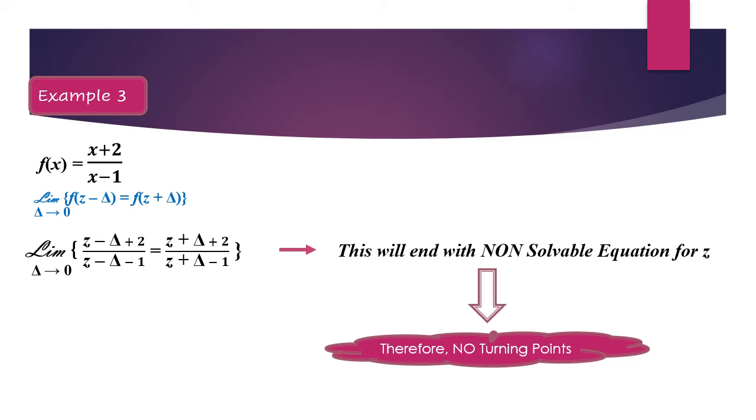And then if you simplify this, which I'm leaving for the reader here, to simplify this, and then you will see that you will end with an equation in which is non-solvable for z, you can't solve it. Then obviously there is no turning point. And even if you use differentiation, you will lead to the same conclusion.